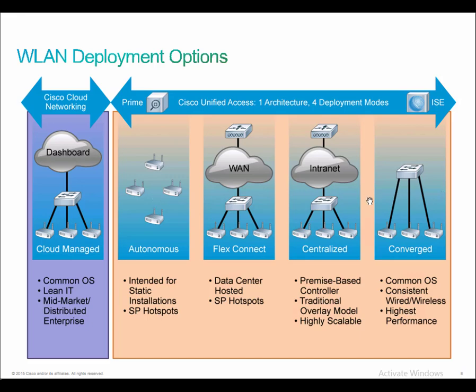The downside to the converged approach is that each switch is kind of its own independent controller, and there is no centralized wireless LAN controller. Cisco is getting away from this converged architecture — the new CCIE wireless program doesn't even include converged architecture anymore, because the cloud-based and centralized approach is what people have really utilized.